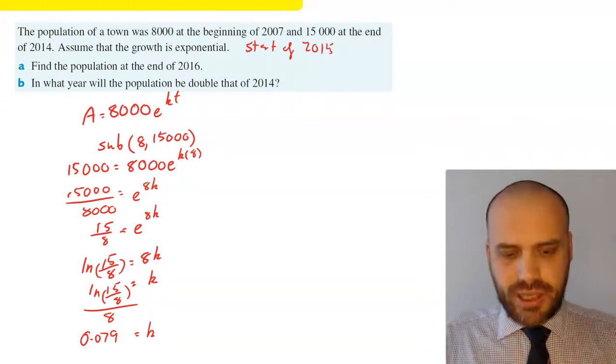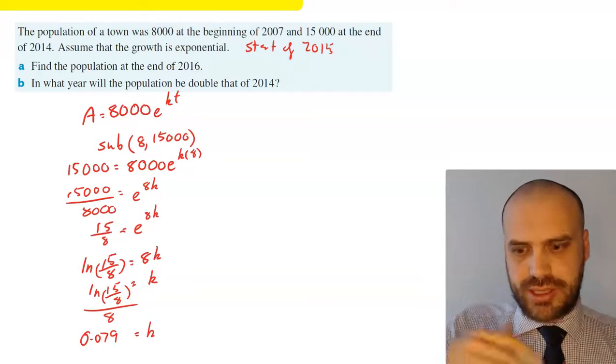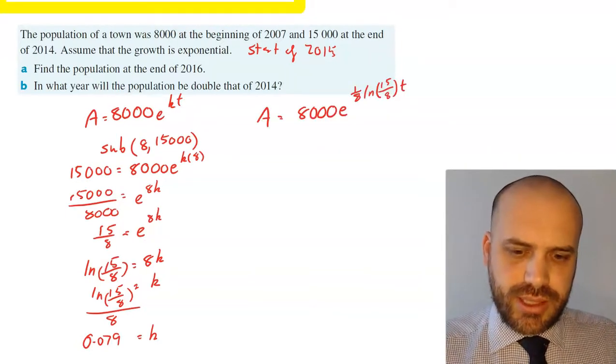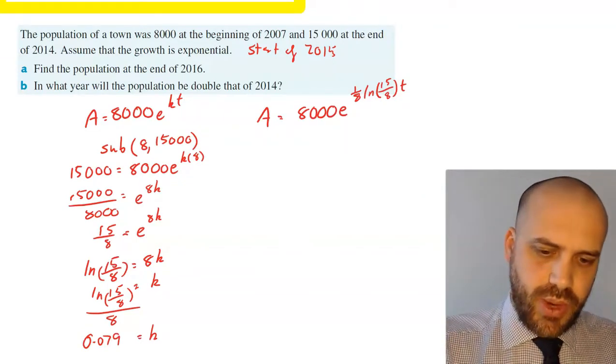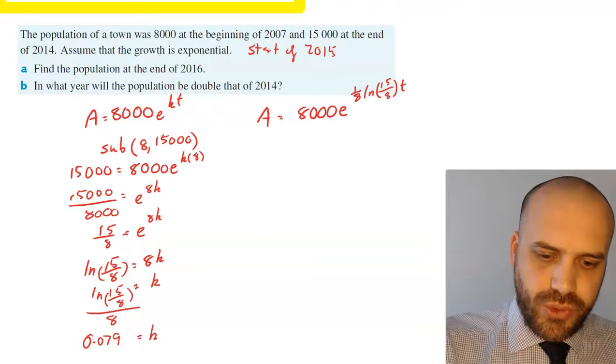Now I'm not in love with that, so let's write it as an exact solution. And we get A = 8000e^((1/8)ln(15/8)t). So I've just subbed in (1/8)ln(15/8) for k. Why 1/8? Well if I'm dividing by 8 here, that's the same as multiplying by 1/8.